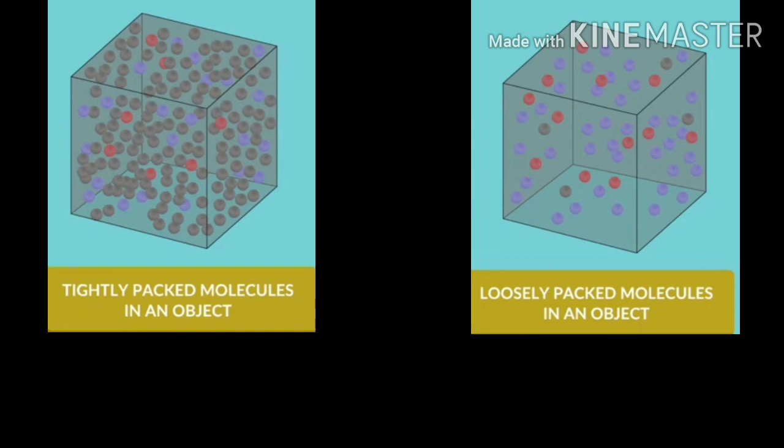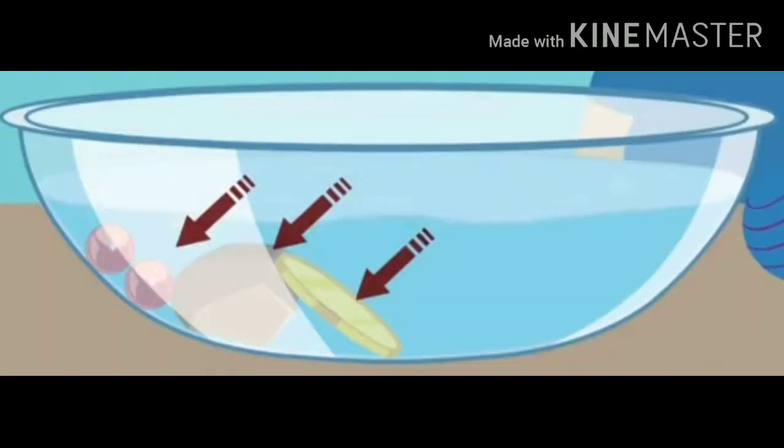The objects in which molecules are tightly packed have more density compared to the objects in which molecules are loosely packed. Whatever objects sink are more dense. See this stone, coin, these marbles, they all sink in water because the molecules are tightly packed in these.